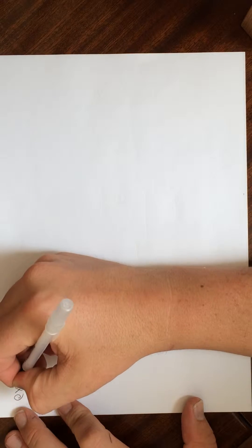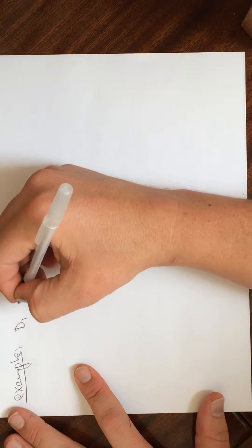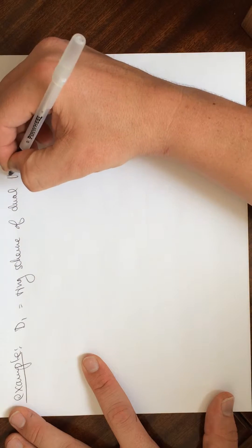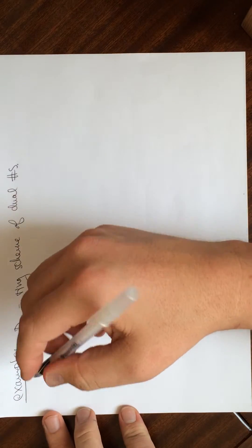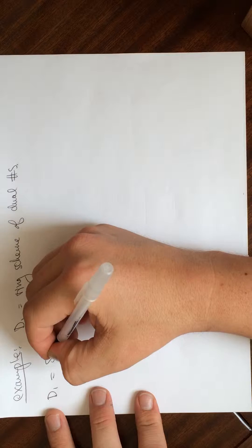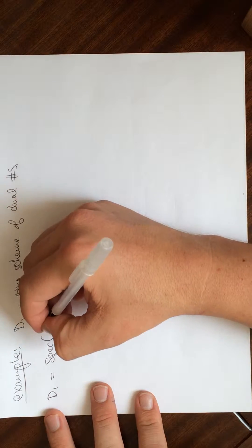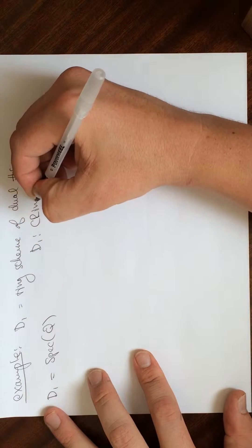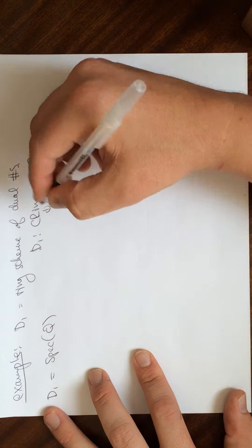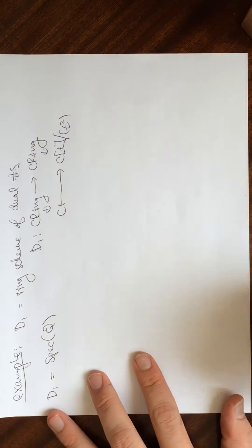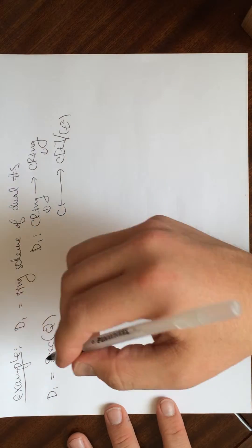This is going to be the ring scheme of dual numbers D1. This is our first example. This is going to be Spec Q of D1, so the functor is from the category of commutative rings and it takes one of these rings and maps it to the ring where we join t and mod out by t squared.